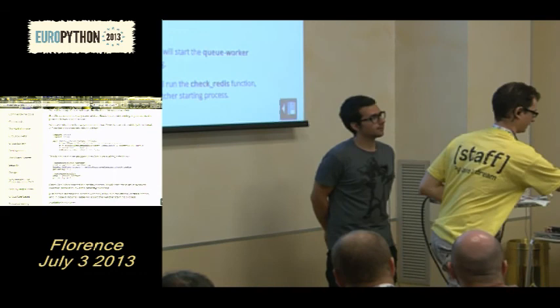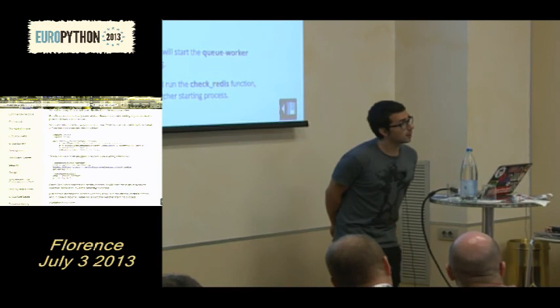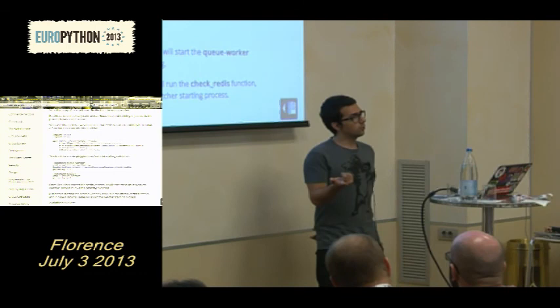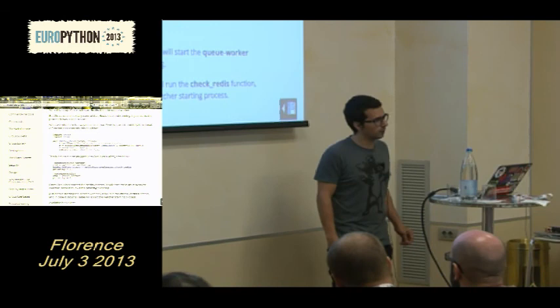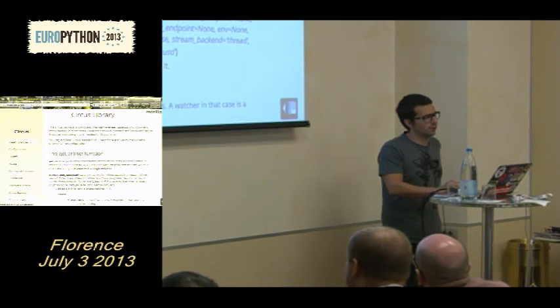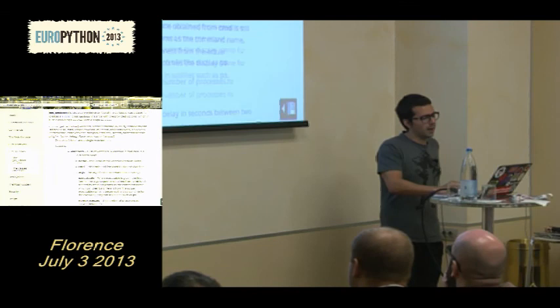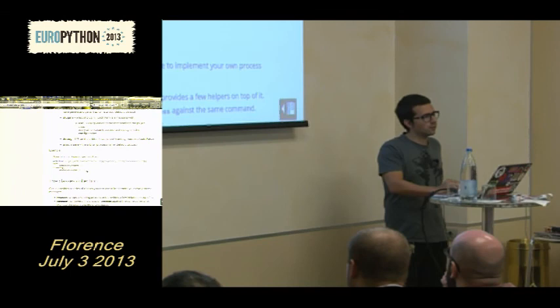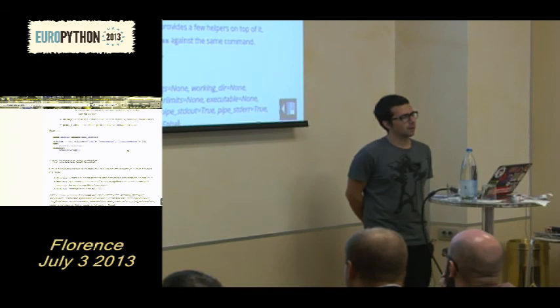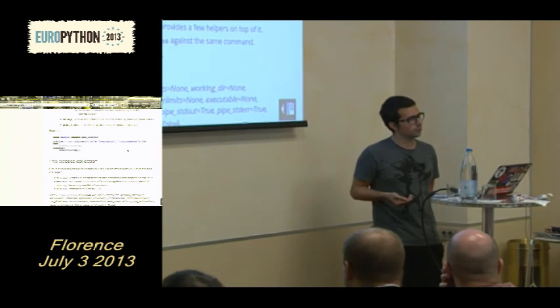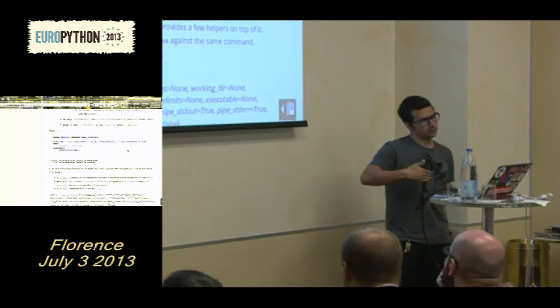You can also start Circus from within Python for testing. When you create the arbiter object you specify whether it runs in the background or uses the main blocking loop. There's a get_arbiter function where you provide options, get back an object, call start, and have Circus running. You can run it as a blocking tornado event loop, or use background=True to run it in another thread.